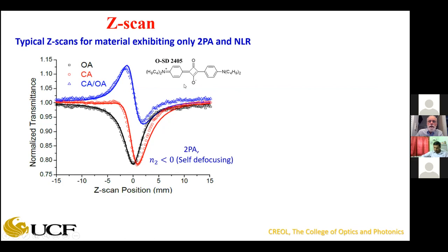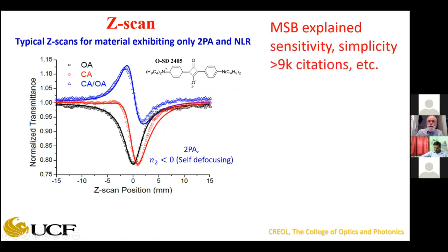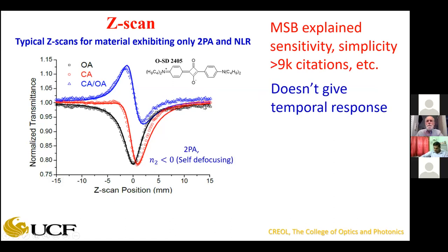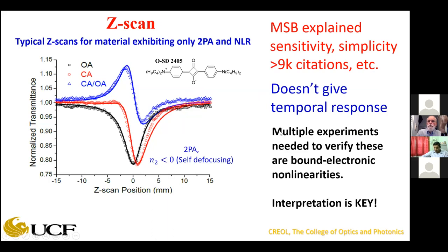This is interesting for an organic material — there are some organic materials that have negative bound electronic N₂. The simplicity of the experiment is part of the reason there are over 9,000 citations for this technique. But there are some things the z-scan doesn't do: it doesn't give you the temporal response, it doesn't necessarily tell you whether it's third-order or higher-order, and you really do need to do multiple experiments to verify bound electronic nonlinearities. Interpretation of these experiments is important.